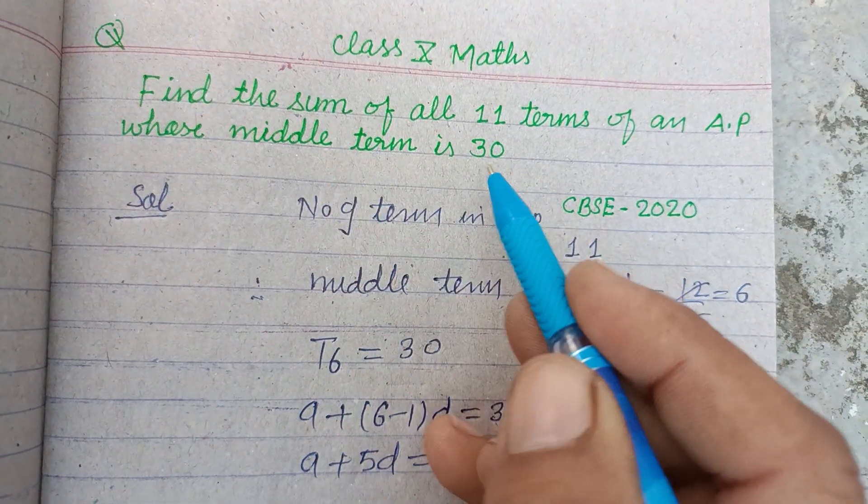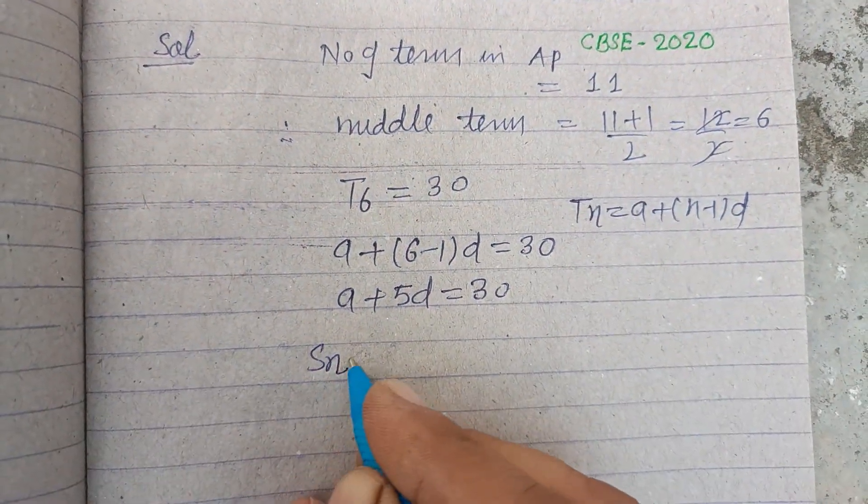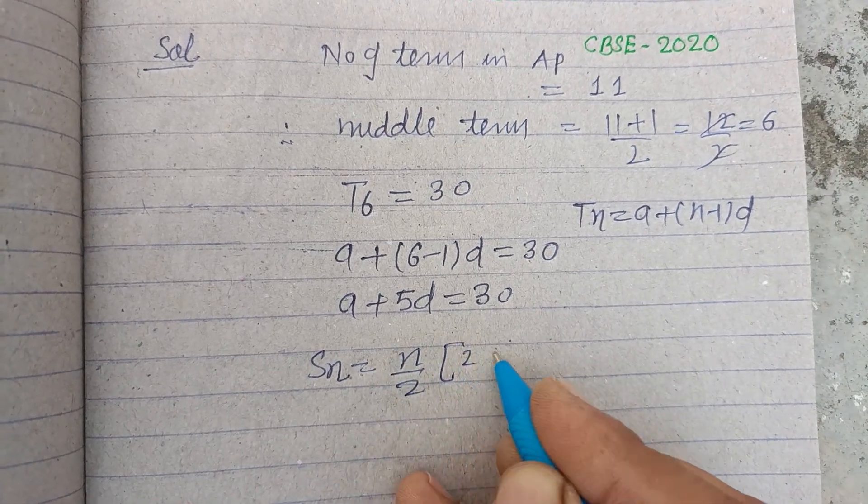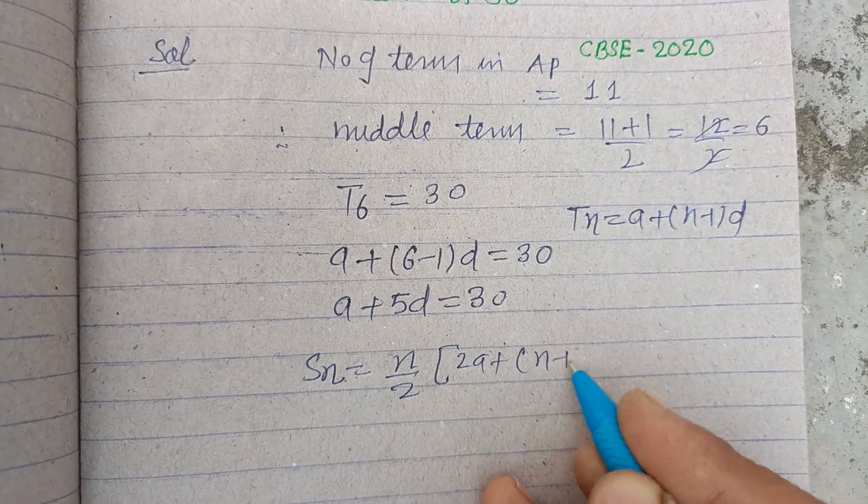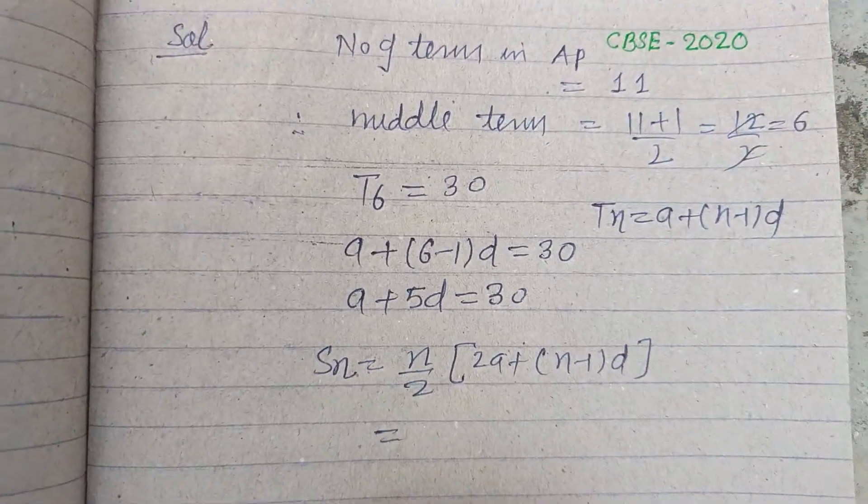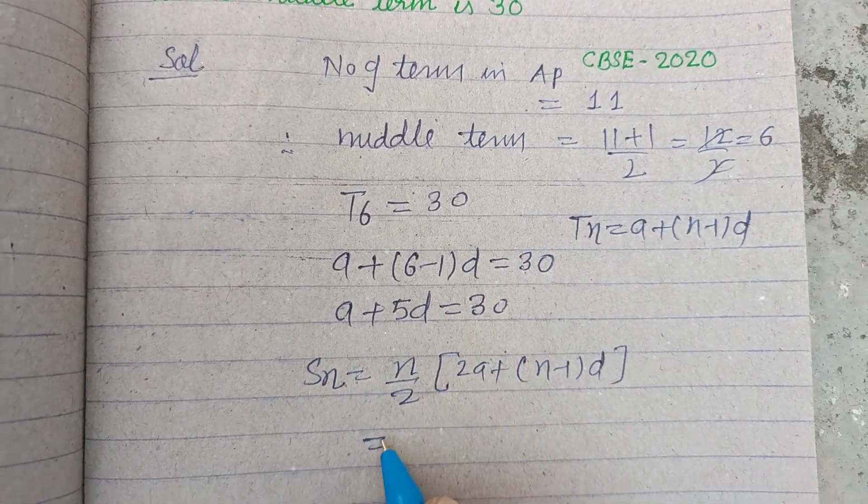We want to find out the sum of all 11 terms. The sum of n terms, as you know, is Sn = (n/2)[2a + (n - 1)d]. So we write...